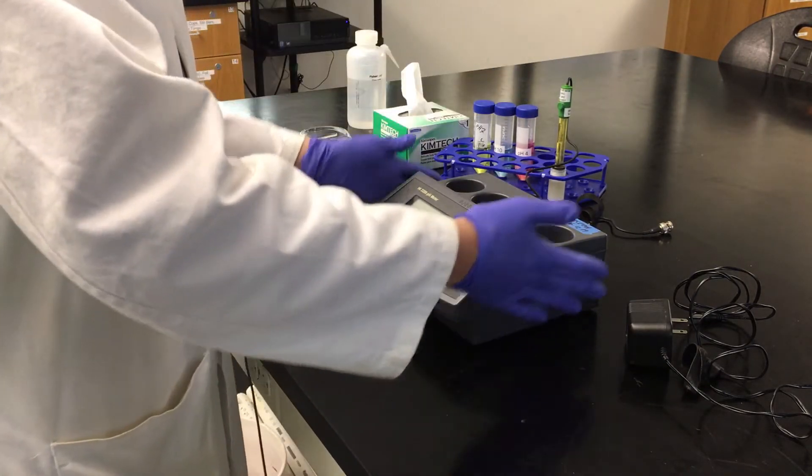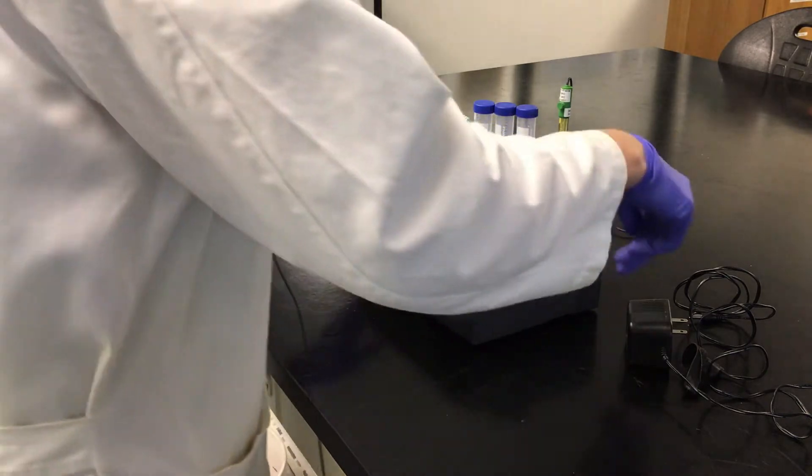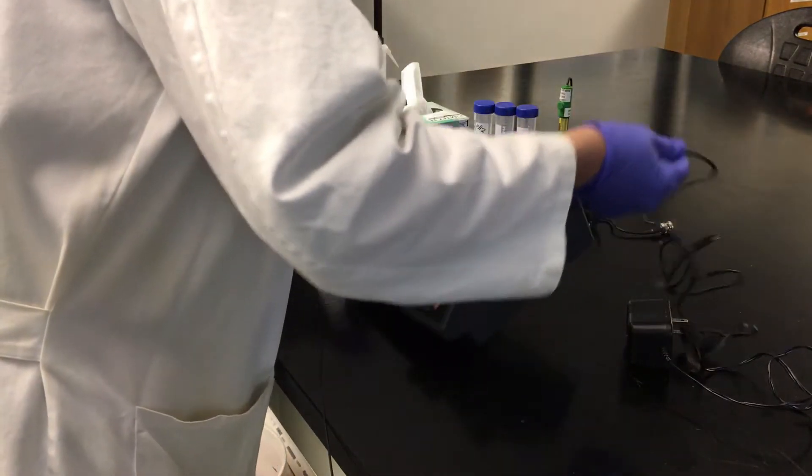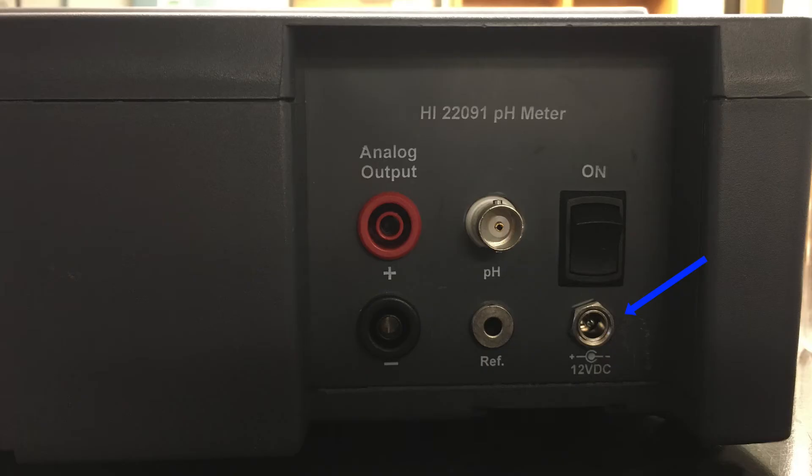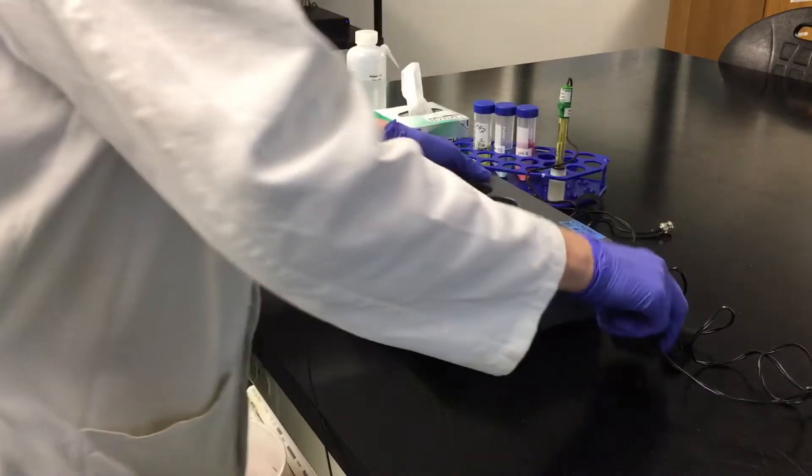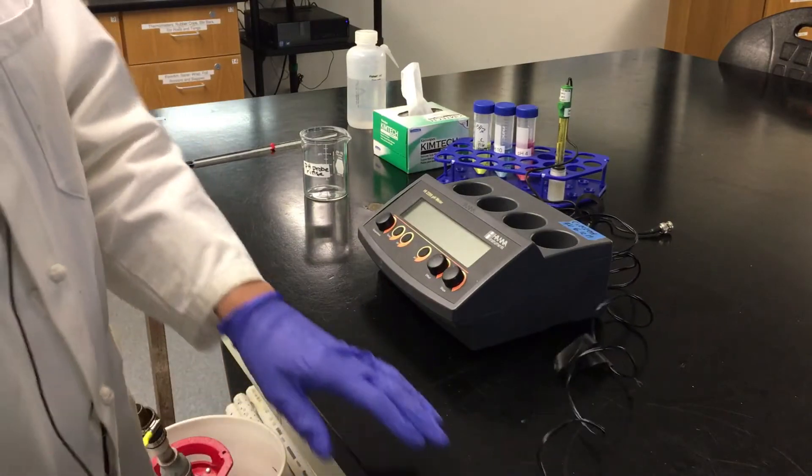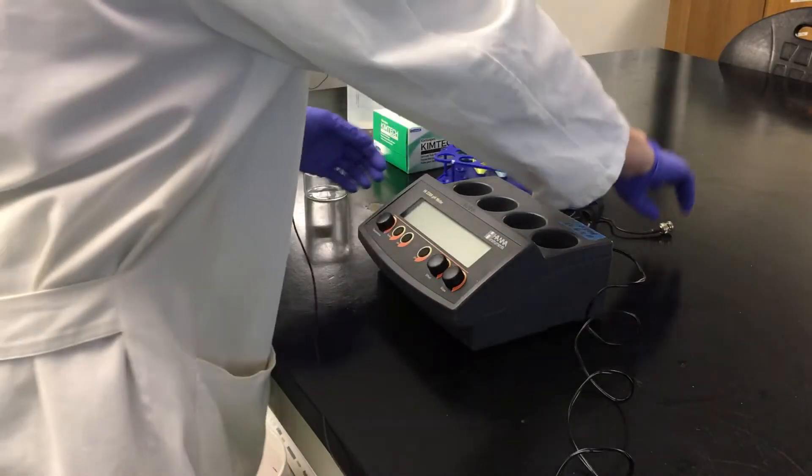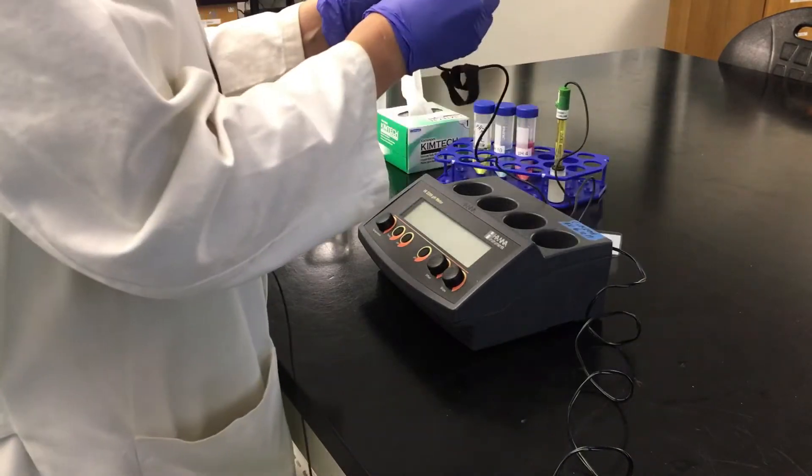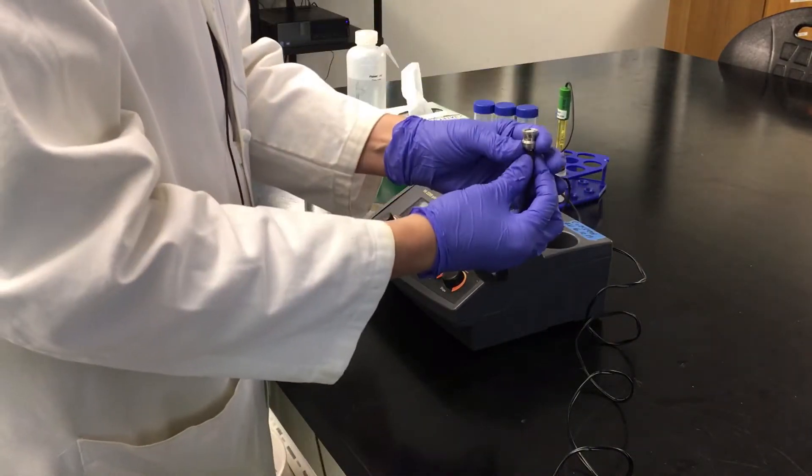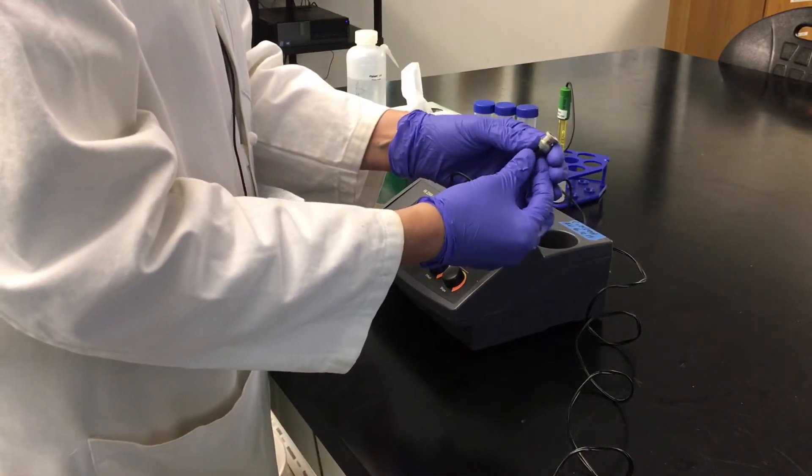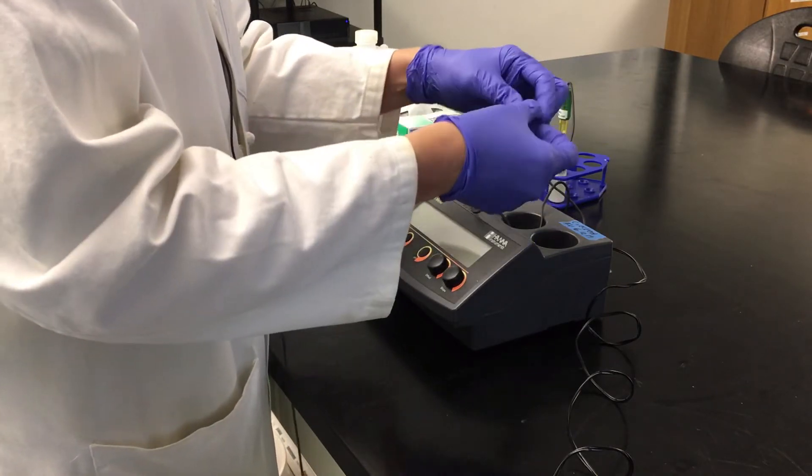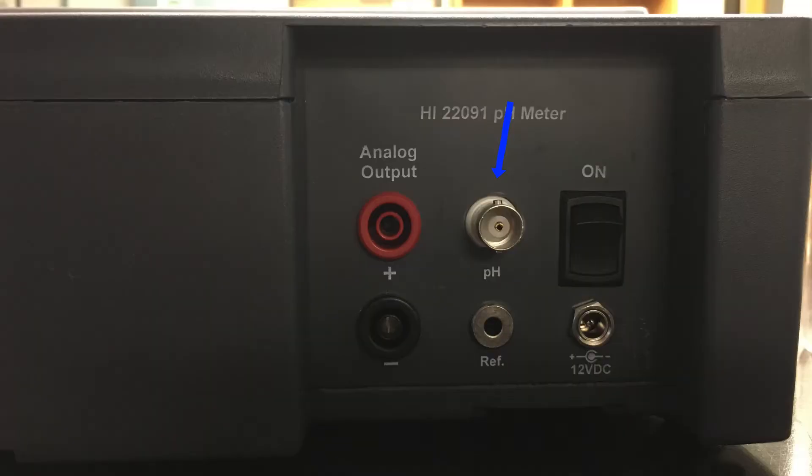Okay, so the first thing we want to do is make sure that our meter is plugged in. We're going to plug that in, and then we also want to plug in our probe. The probe is connected by a BNC connection, so you have to make sure that you are placing it right in the back of the meter,